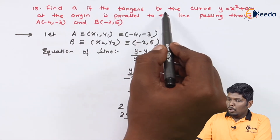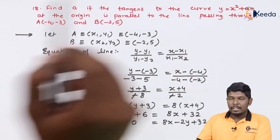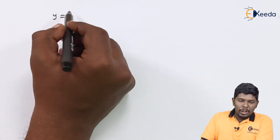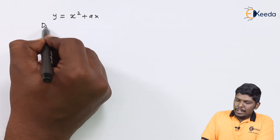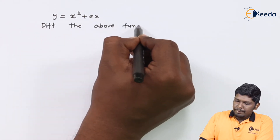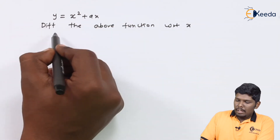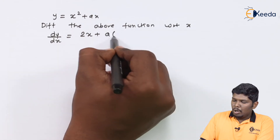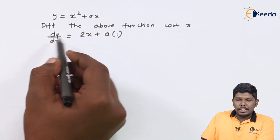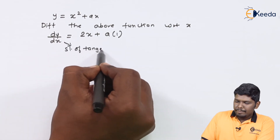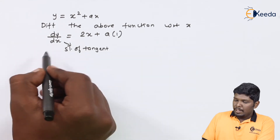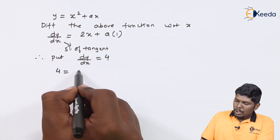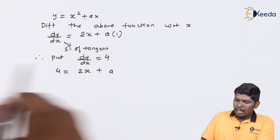We have been asked to find the value of 'a' for which the tangent to the curve y = x² + ax has slope 4. Let us differentiate the curve with respect to x. Derivative of y gives dy/dx; derivative of x² is 2x, and a being constant, derivative of ax is a. So dy/dx = 2x + a. We know that dy/dx represents the slope of the tangent.